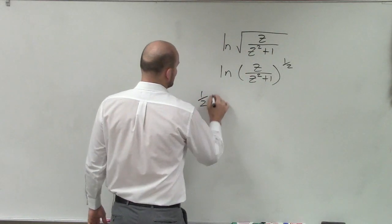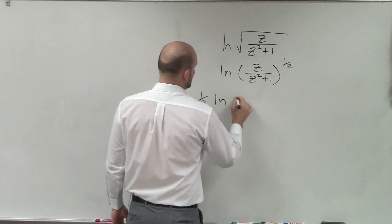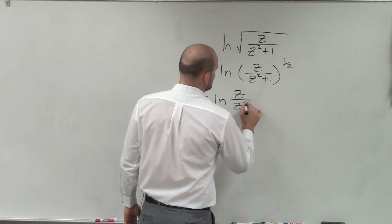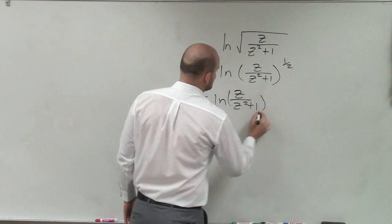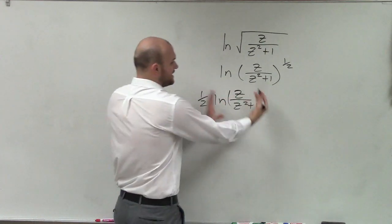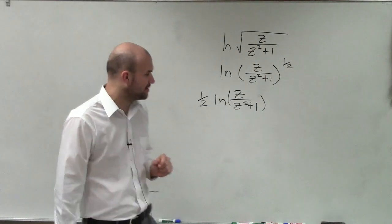So therefore, that's the 1 half times ln of z over z squared plus 1. And I'll put these in parentheses, just so you're taking the ln of z divided by z squared plus 1.